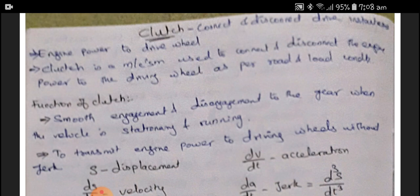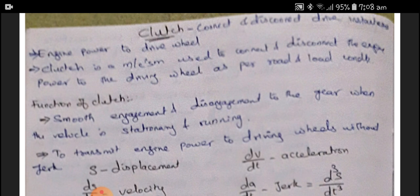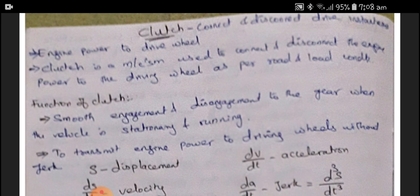Today's topic is clutch. What does it mean by a clutch? It is a mechanical device, like a coupling. It is used to connect and disconnect drive instantaneously. So where we are using it is engine power to drive wheel — between the engine and the gearbox, clutches are used.